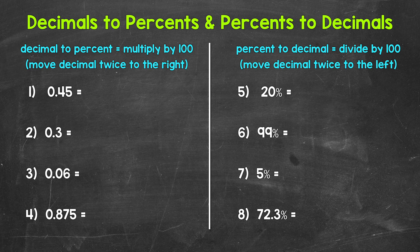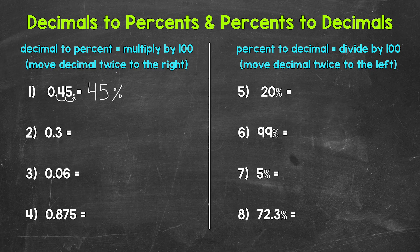So for number one, let's move that decimal twice to the right — again, we're multiplying by 100 here. Once, twice. Now the decimal comes after the five. That gives us 45. So 45 hundredths equals 45%, and we've converted that decimal to a percent.